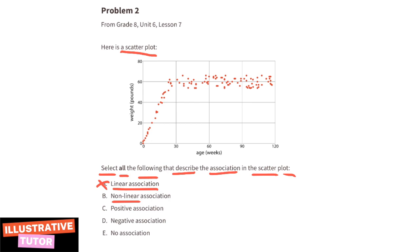Part c: positive association. As the age increases, the weight also increases, so there is a positive association. Since it has a positive association, we know it can't be part d: negative association. And since it has a non-linear association and a positive association, we know it won't be part e: no association.